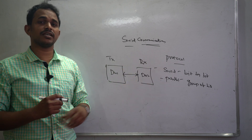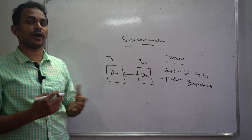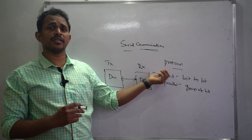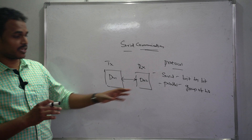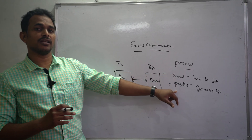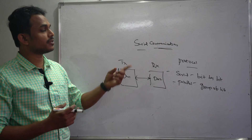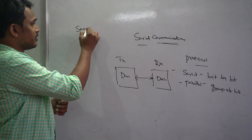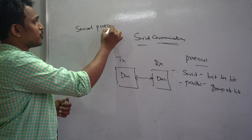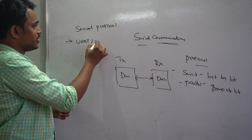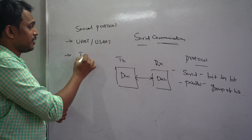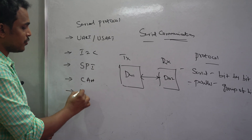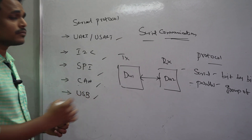Serial and parallel communications support physical wired connections. For wireless communications, there are different methods using modulation techniques and various wireless modules available in the market. For serial communication, there are standard related protocols. The standard serial protocols available are: UART, USART, I2C, SPI, CAN, and USB.